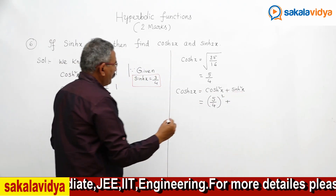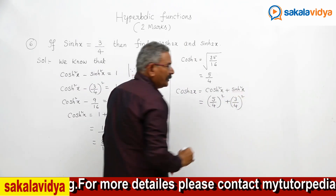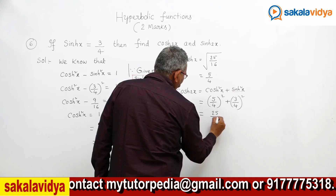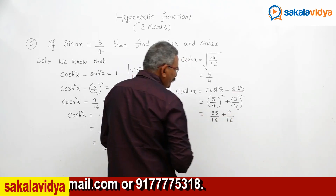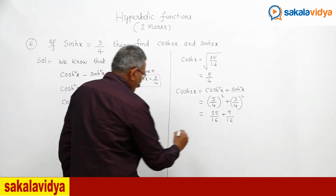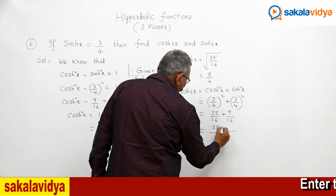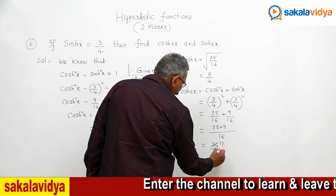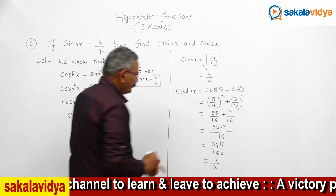cosh(2x) equals cosh²(x) plus sinh²(x). We have cosh(x) = 5 by 4, so that is (5 by 4)² plus (3 by 4)², which simplifies to 25 by 16 plus 9 by 16. With 16 as the LCM, 25 plus 9 is 34 by 16, which reduces to 17 by 8.